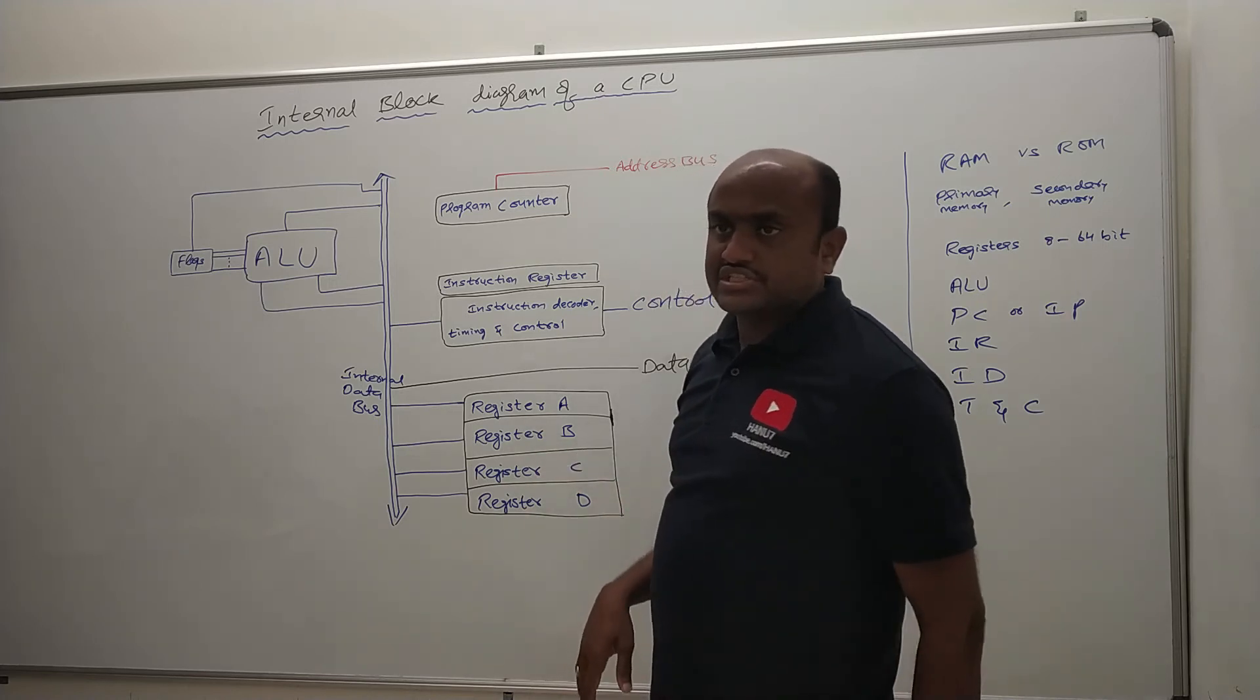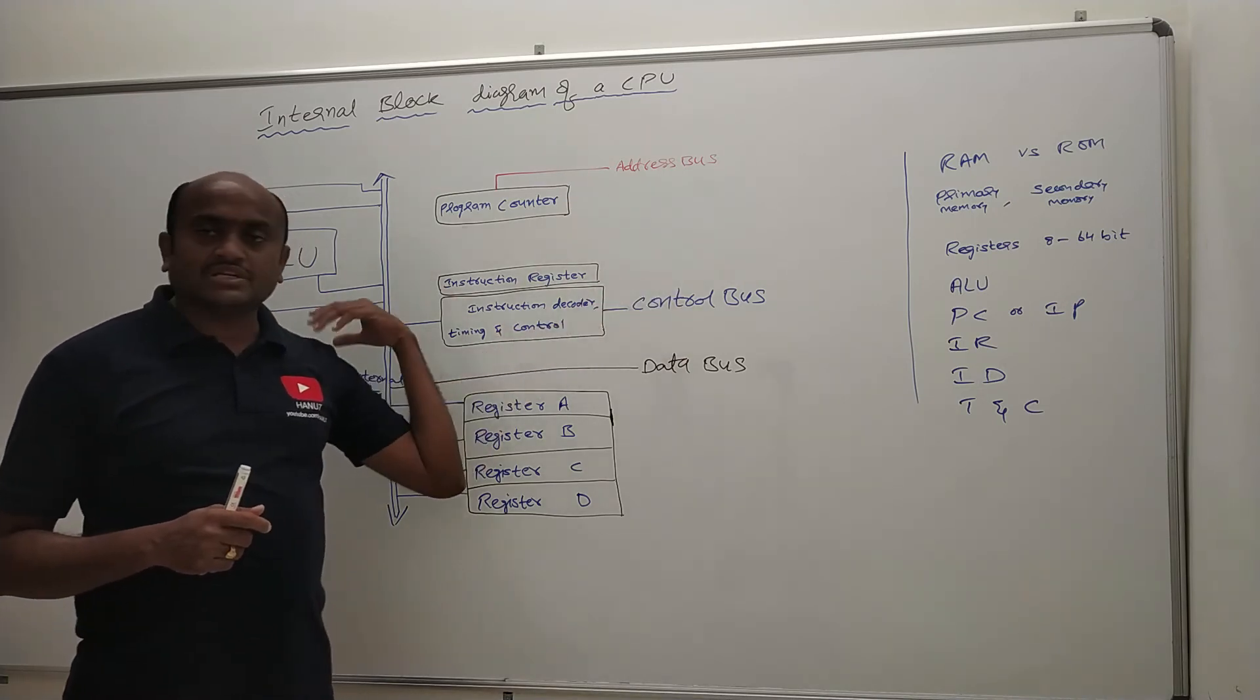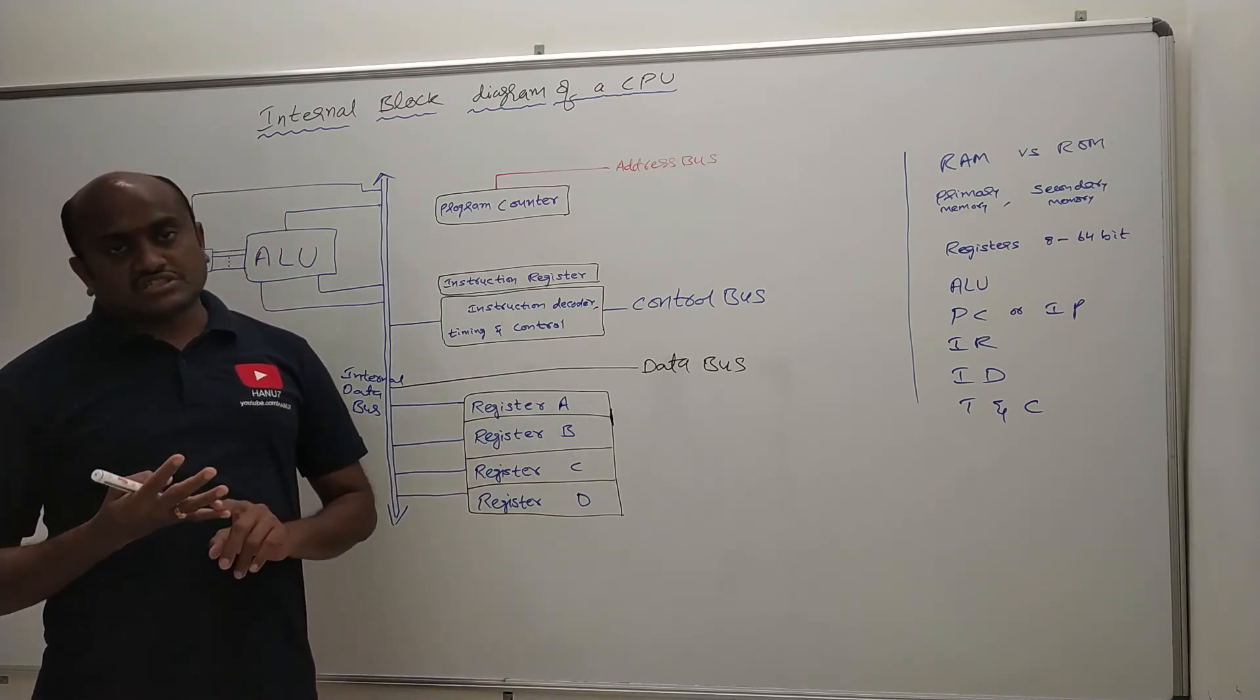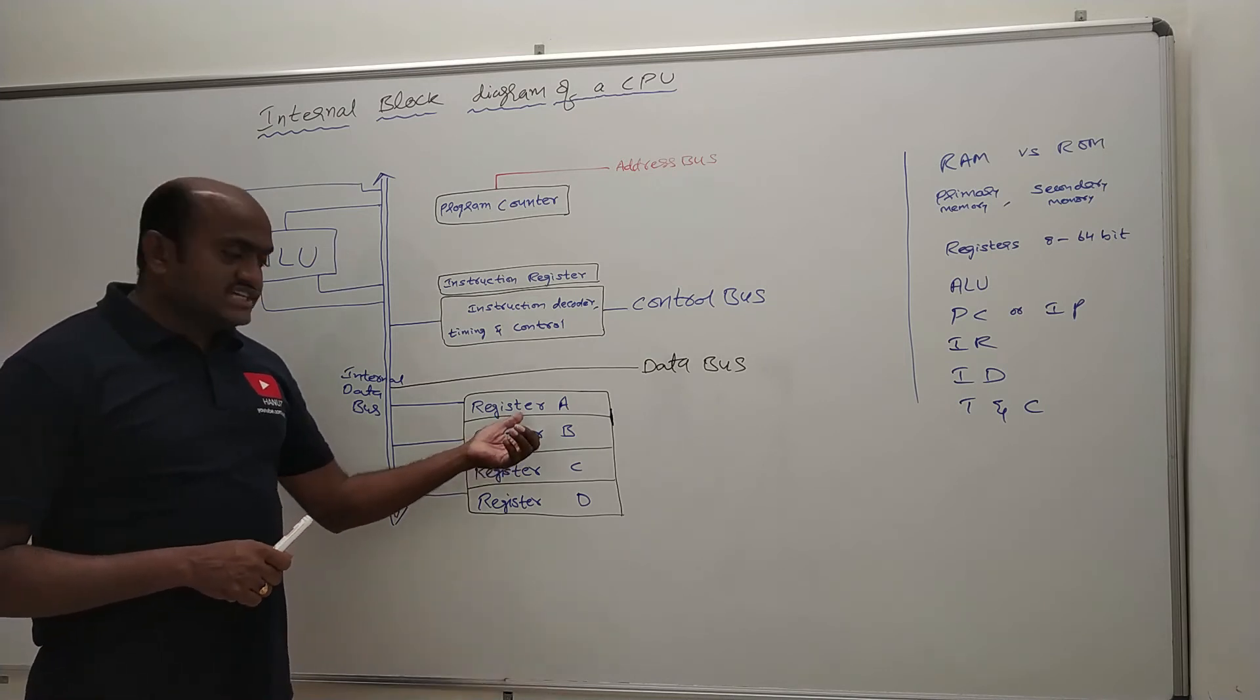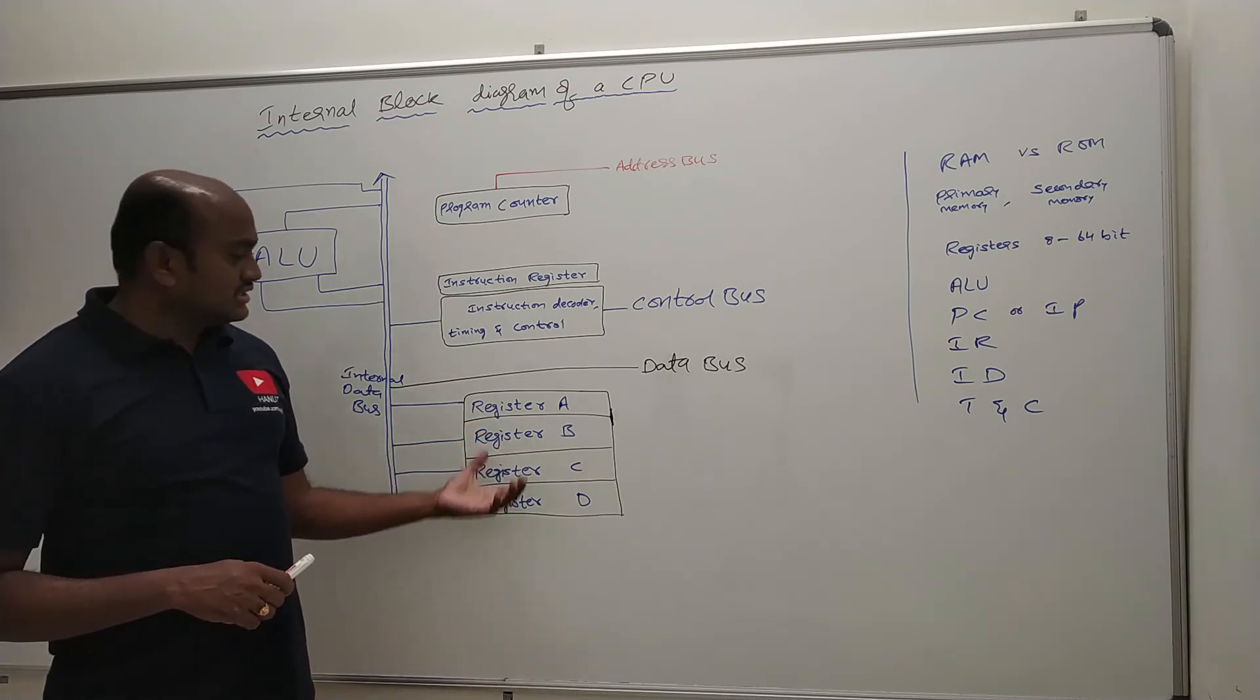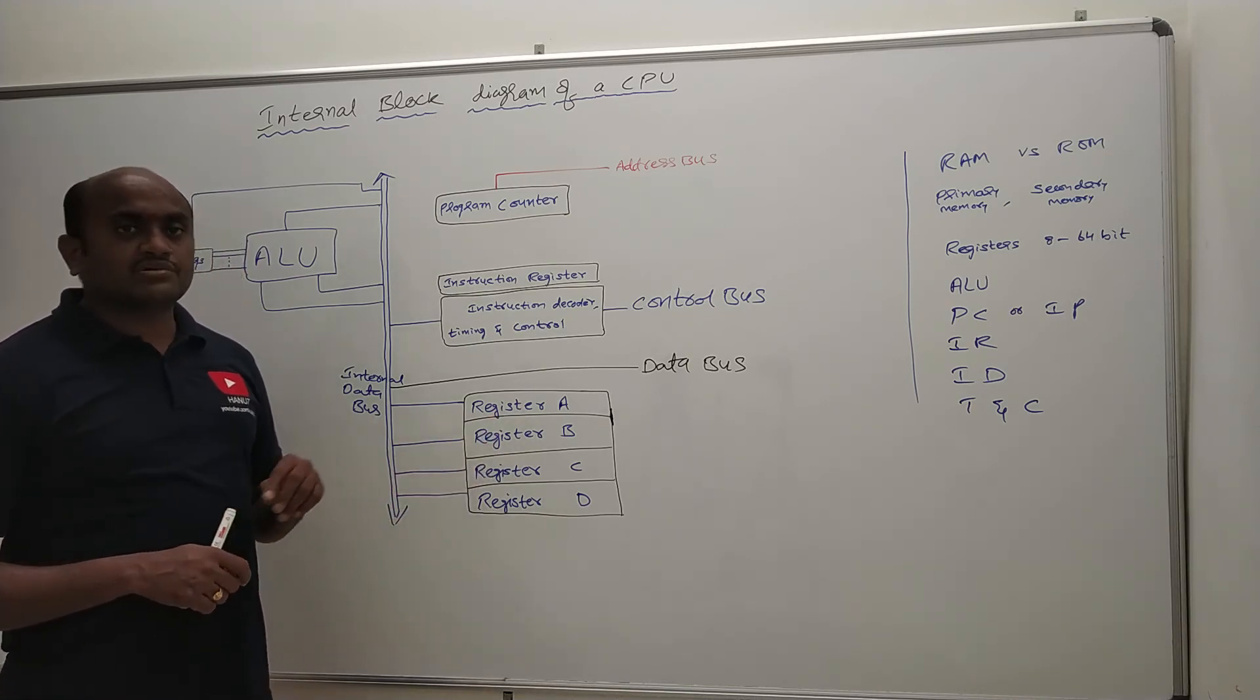Now come into the registers. So in any processor the register set is available. The purpose of the register set is it will be maintaining a temporary storage. Whatever the information that I want to bring from the primary memories or secondary memories, they will be stored into the registers. So these registers could be of either 8 bit, 16 bit, 32 bit or 64 bit depending upon the type of the processor. And the size of the registers will also increase the complexity of such processor. So depending upon the type of the processor, then they will be using the respective register set. 8051 will be having 8 bit register set and 8086 microprocessor will be having 16 bit register set.